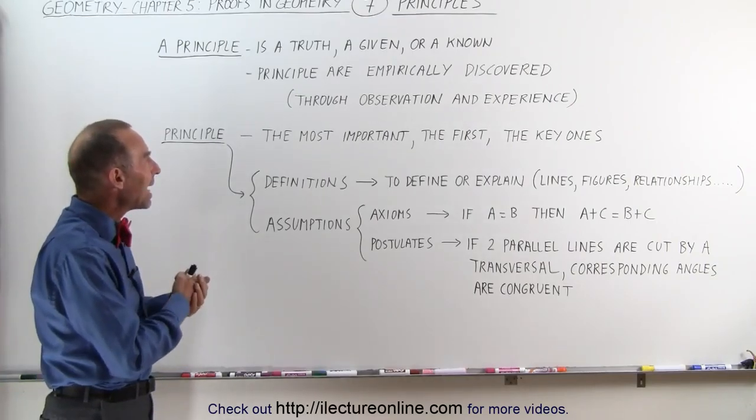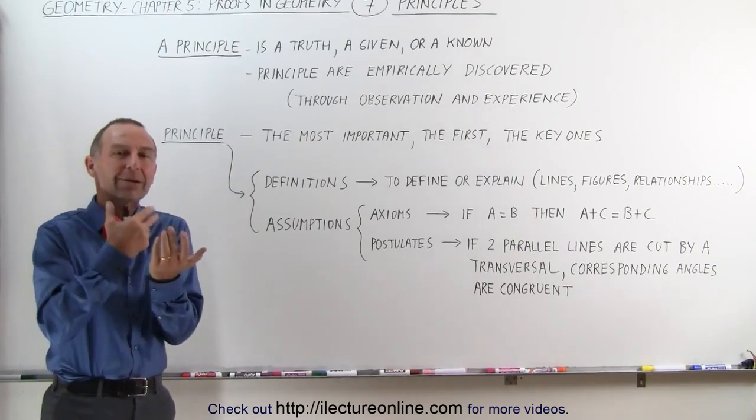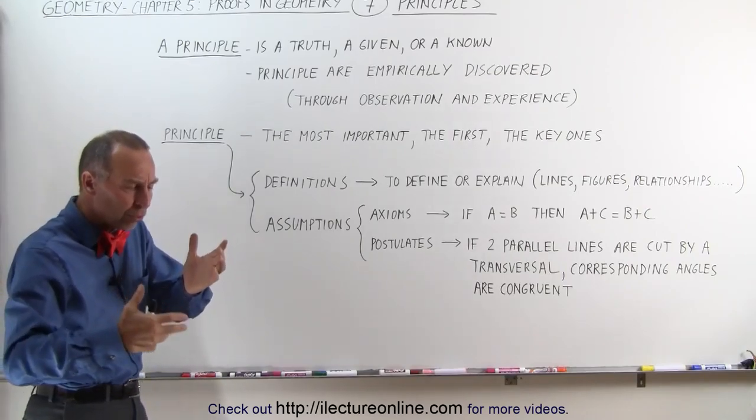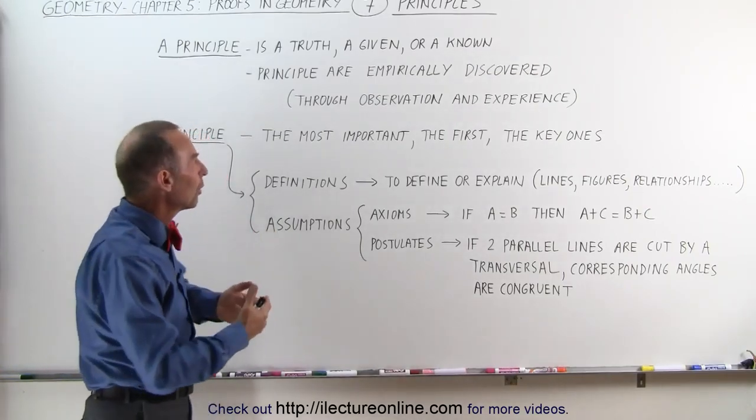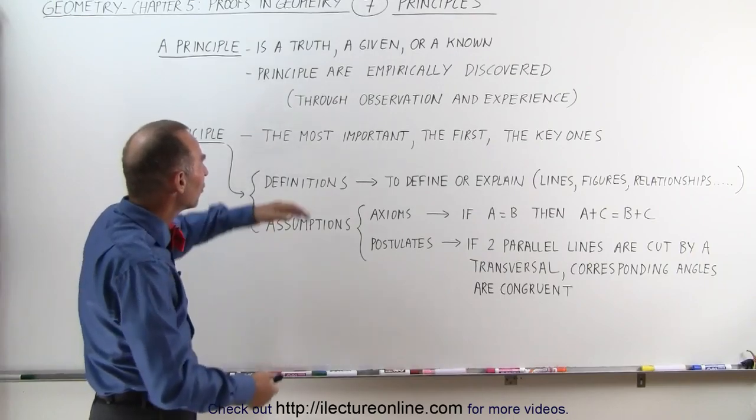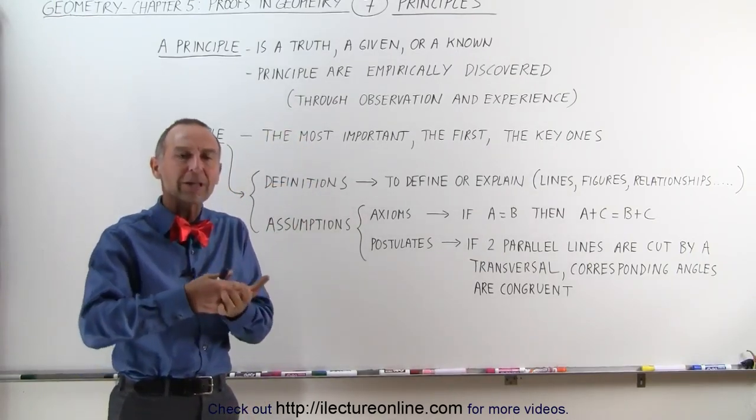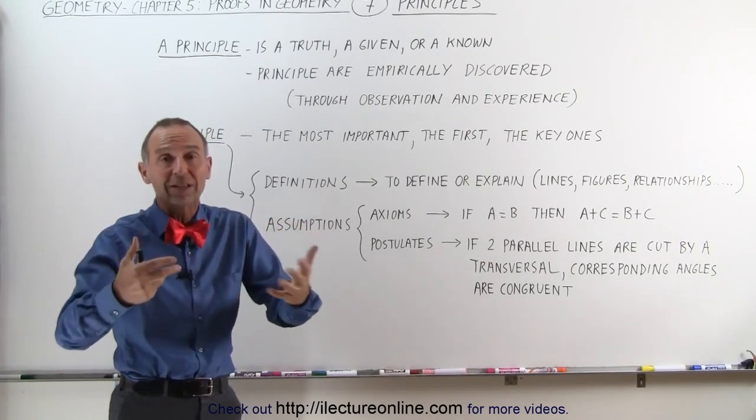And the reason why we can is because they were empirically discovered. Now empirically what does that really mean? Well that's through experience, through having observations, and so when we observe something, we experience something over time, we all accept it as simply being that is always the case.